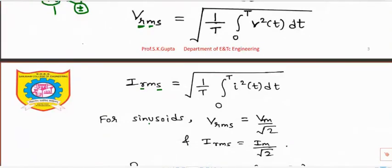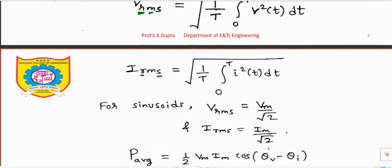If you have a sinusoidal signal, there is one relationship between RMS value and peak value: V_RMS = Vm / √2 and I_RMS = Im / √2.